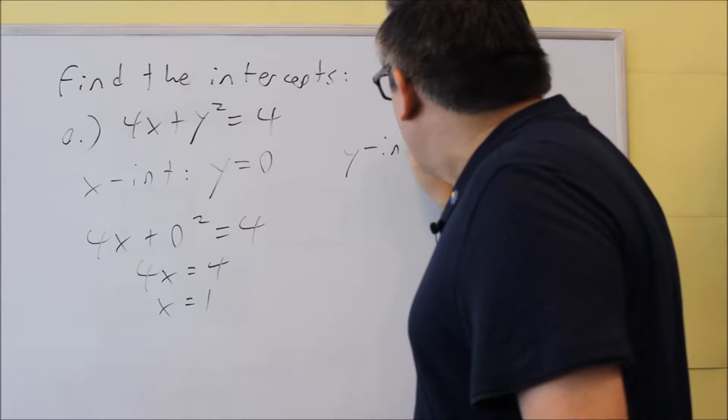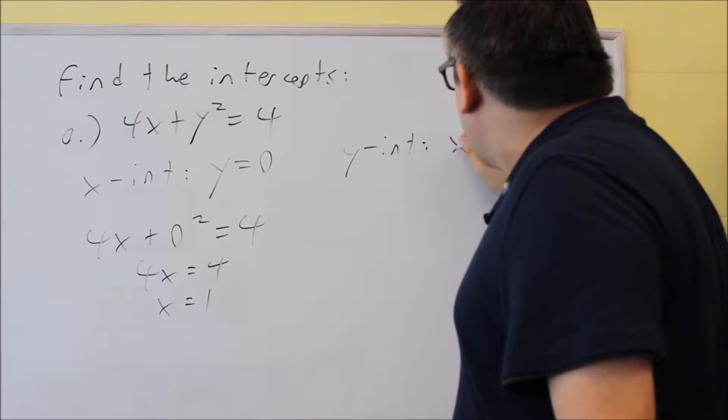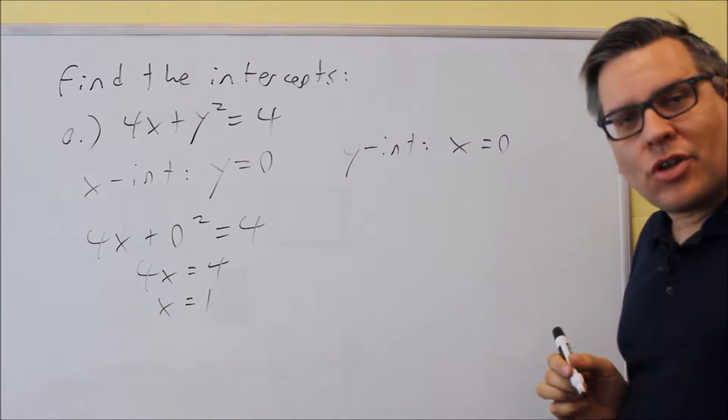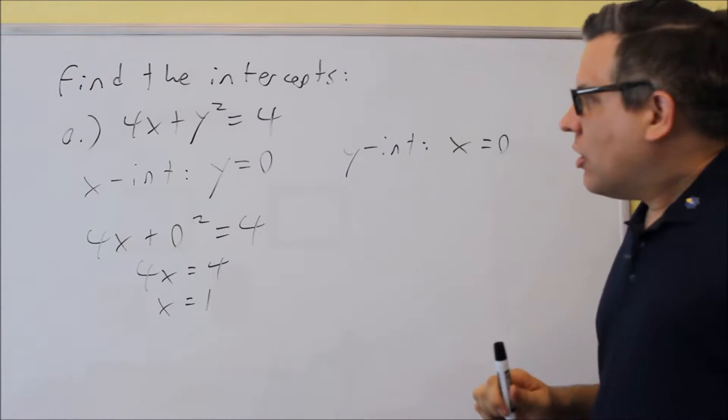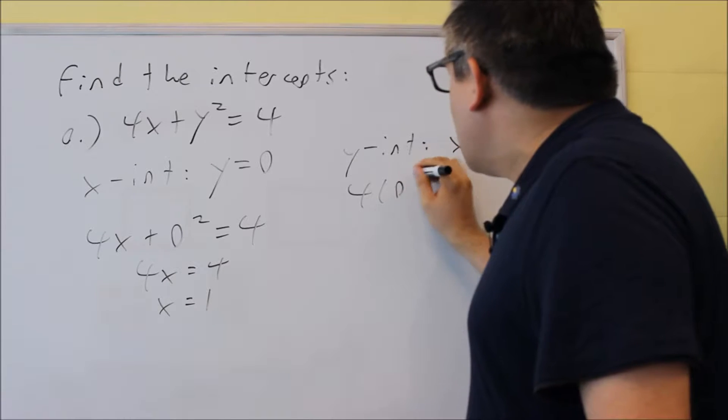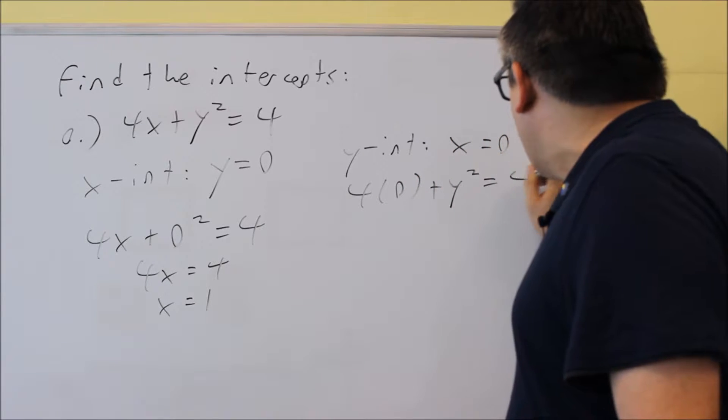Next, we want to find the y-intercept. The y-intercept is where you put in a 0 for x. So let's do that. Put a 0 into the original equation there. 4 times 0 plus y squared equals 4.